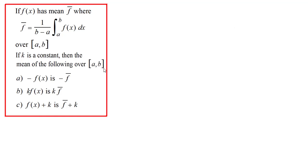I've got three results here which we need to learn for transformations of graphs and how they affect the mean. If you've got negative f of x, then the new mean is the negative of the old mean f bar. And if you multiply f of x by the constant k, then the new mean is k times the old mean f bar. And finally, if you add a constant to f of x, then the new mean is the old mean plus that constant.